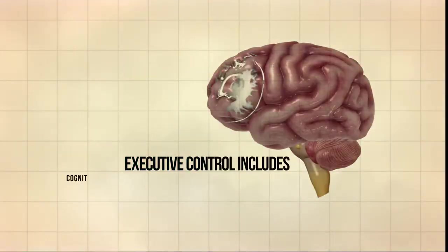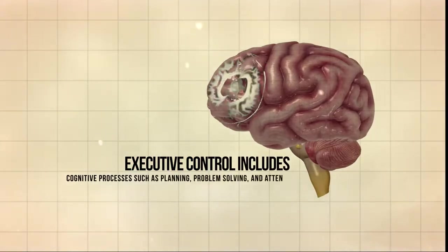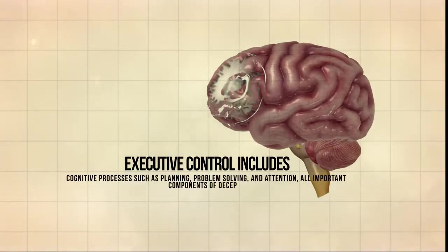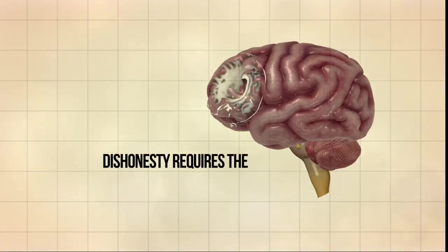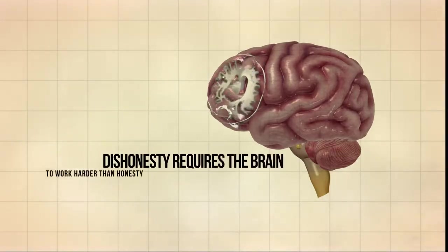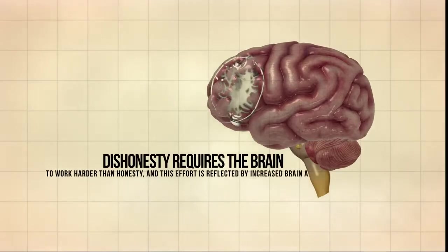Executive control includes cognitive processes such as planning, problem solving and attention, all important components of deception. Dishonesty requires the brain to work harder than honesty and this effort is reflected by increased brain activity.